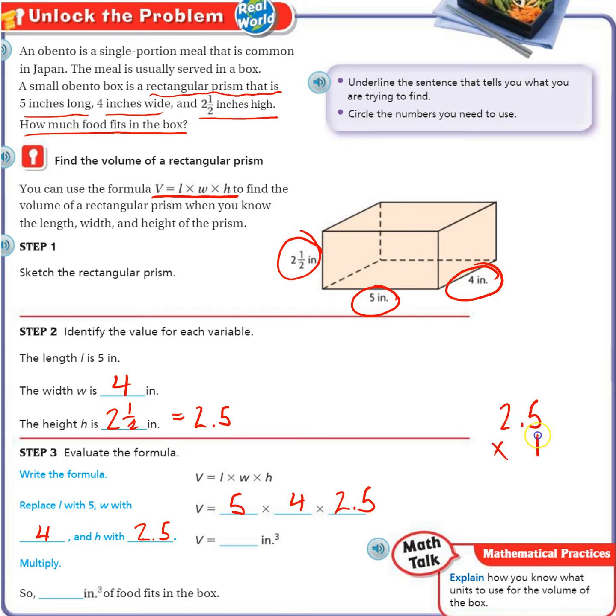2.5 times 4. 4 times 5 is 20. 4 times 2 is 8. Plus 2 is 10. Move my decimal over 1. So 4 times 2.5 is 10. And then 10 times 5.